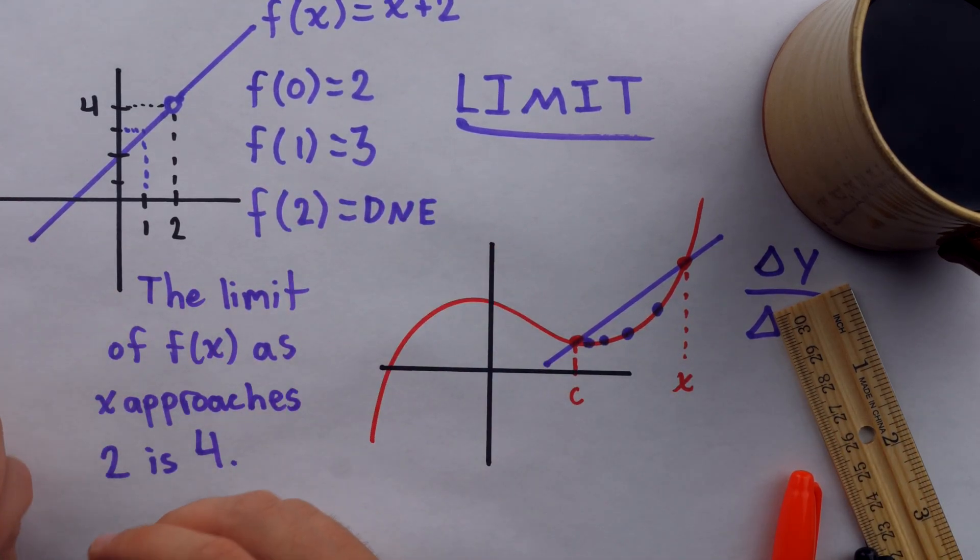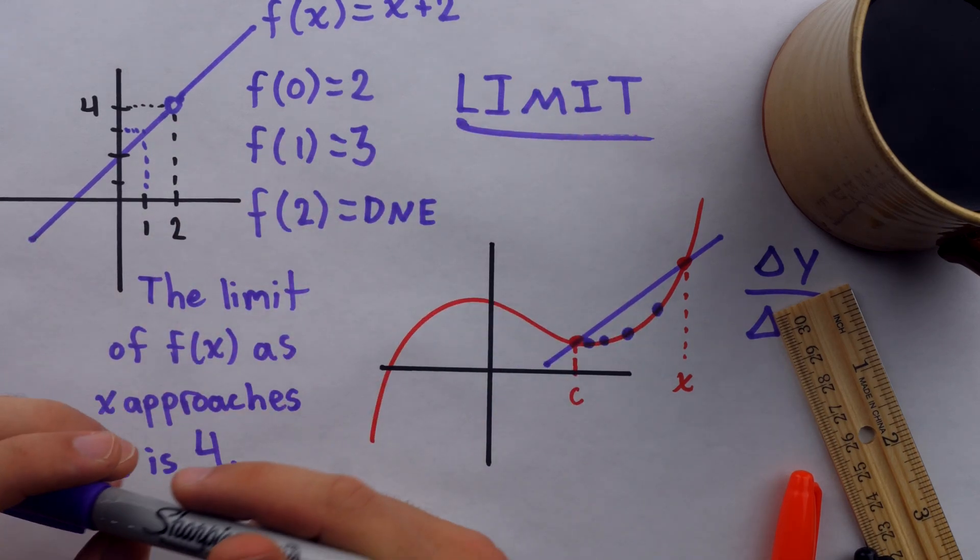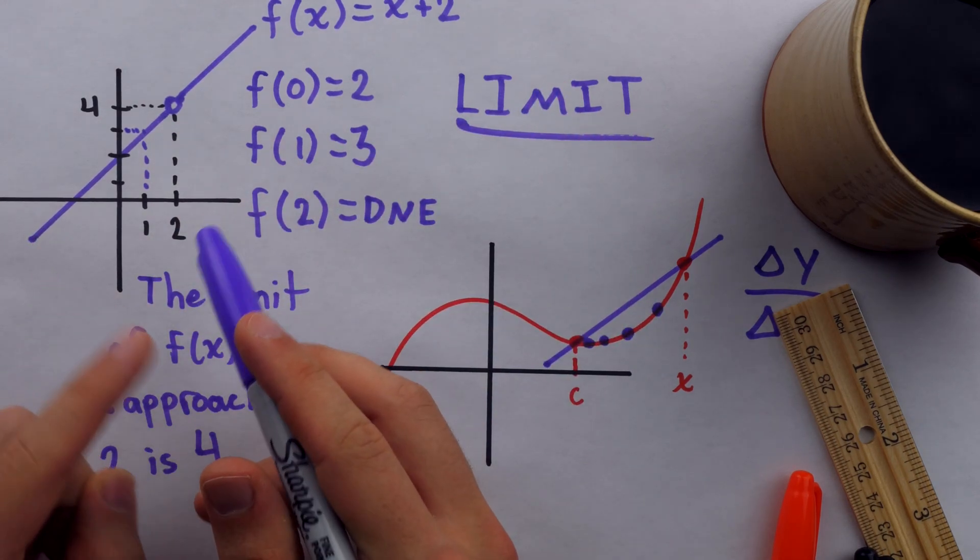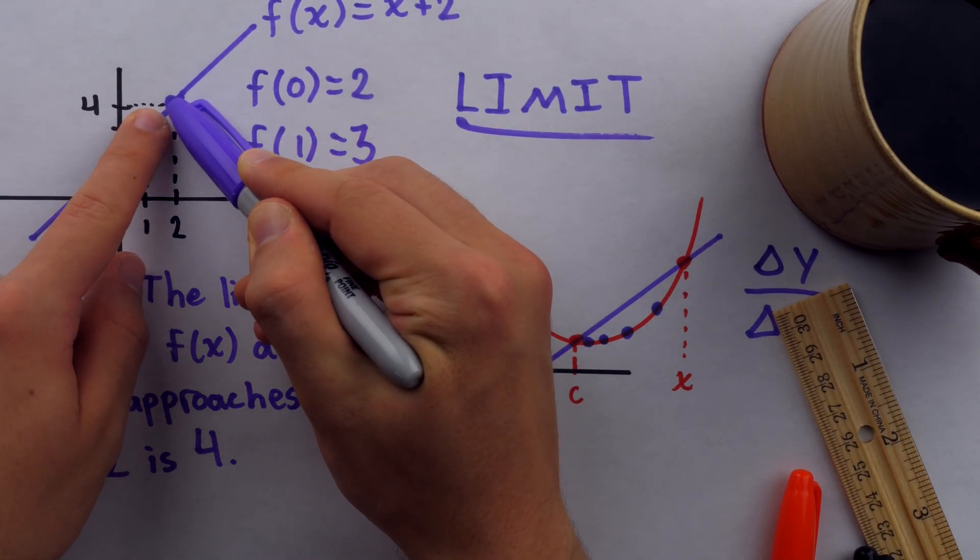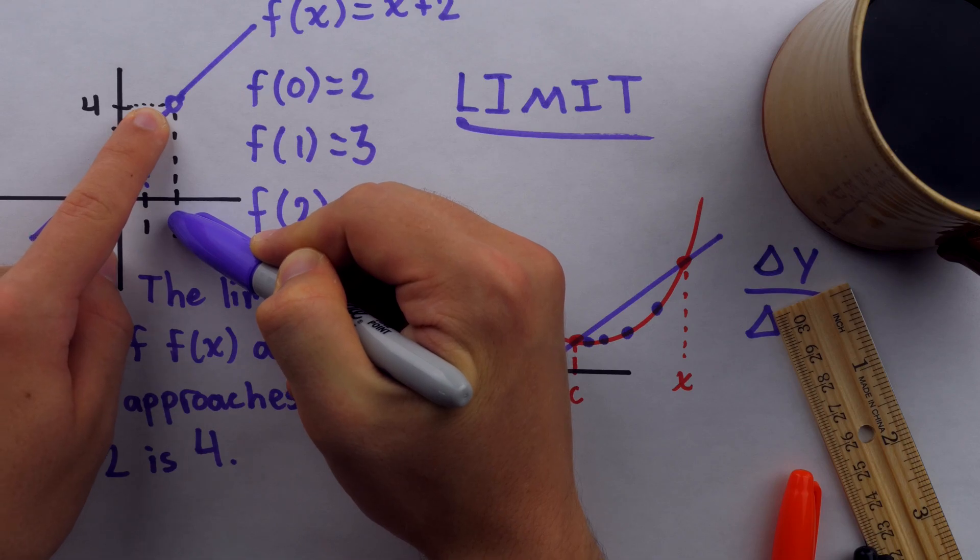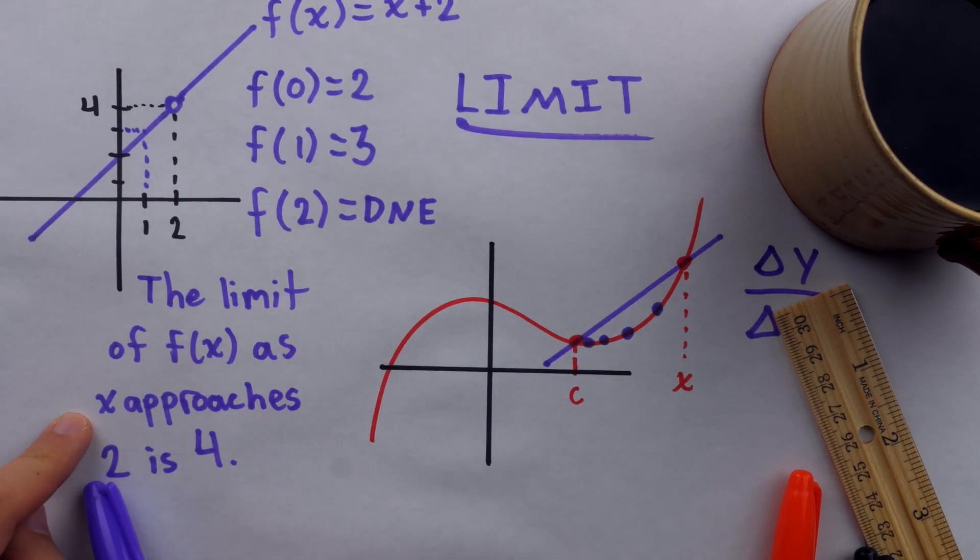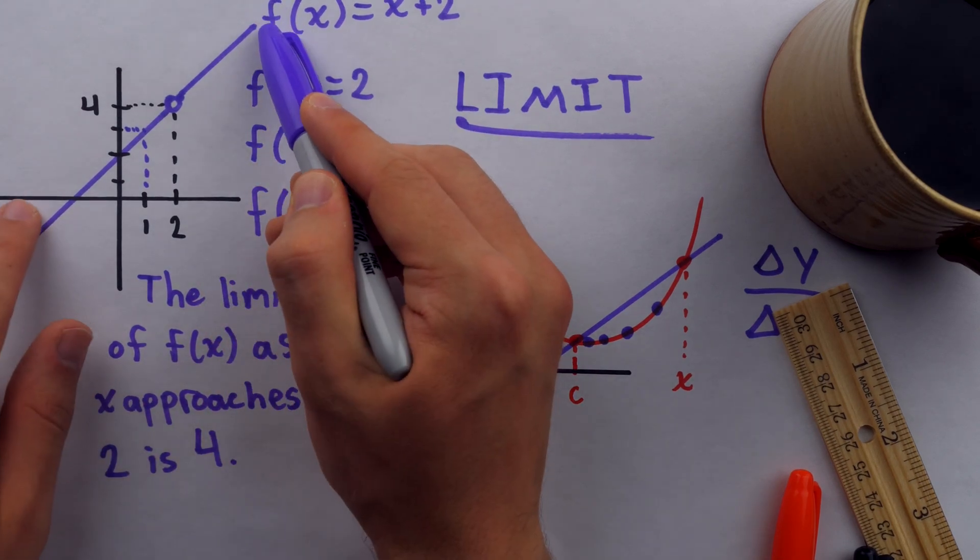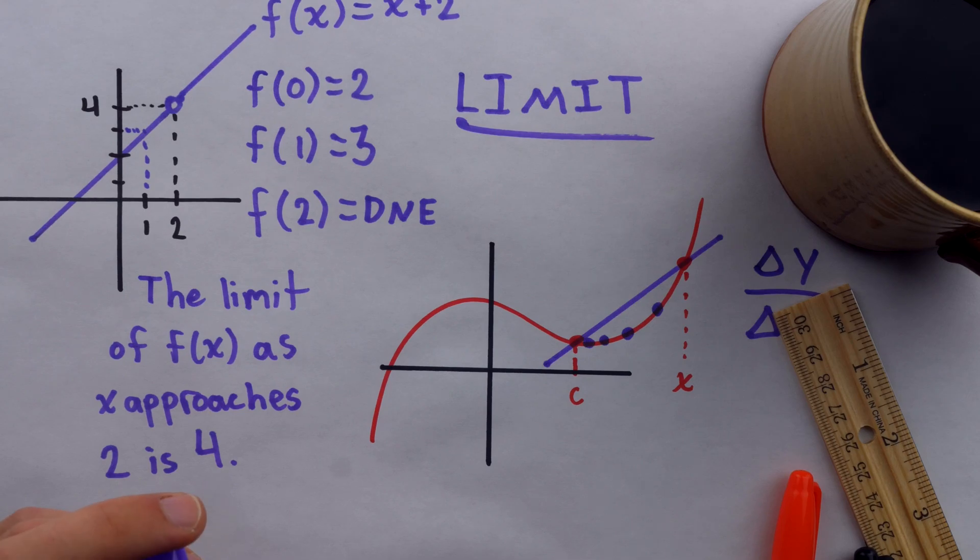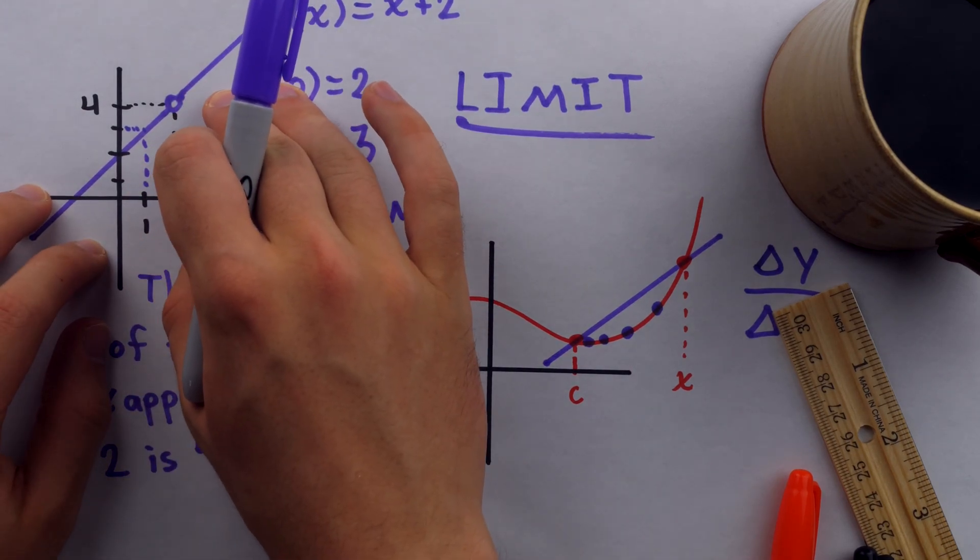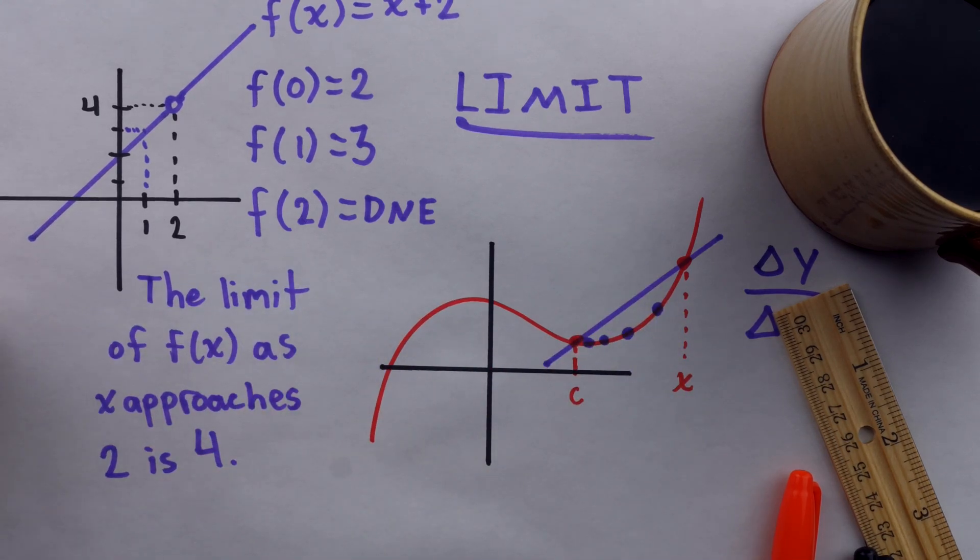As we get infinitely close to x equals 2, as x approaches 2, the limit of the function is 4. That's what the function is approaching, even though it doesn't take on that value. And that's the key part of this example, is understanding the difference between a function's value and its limit.